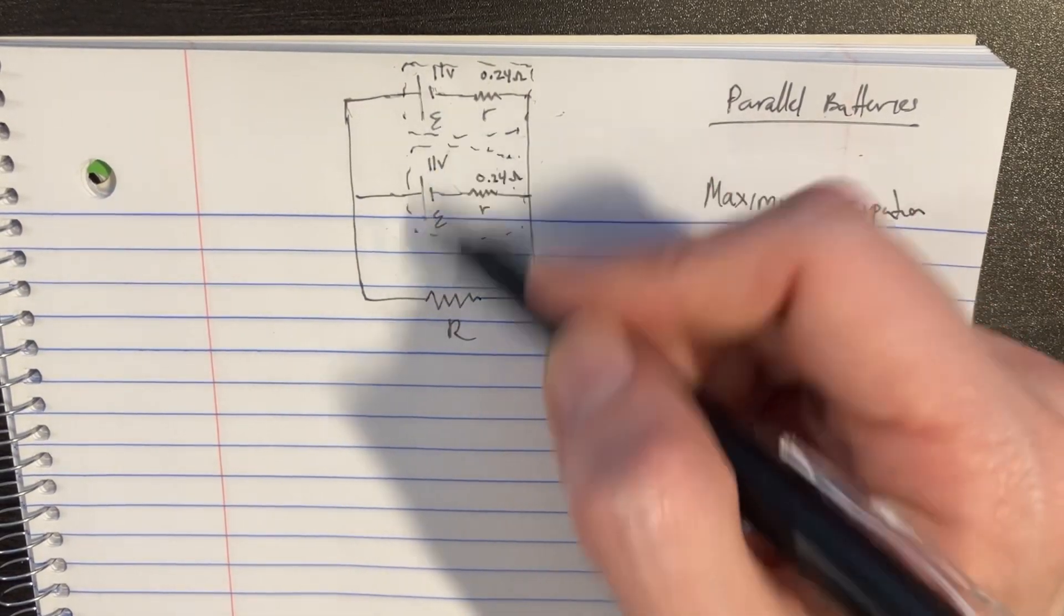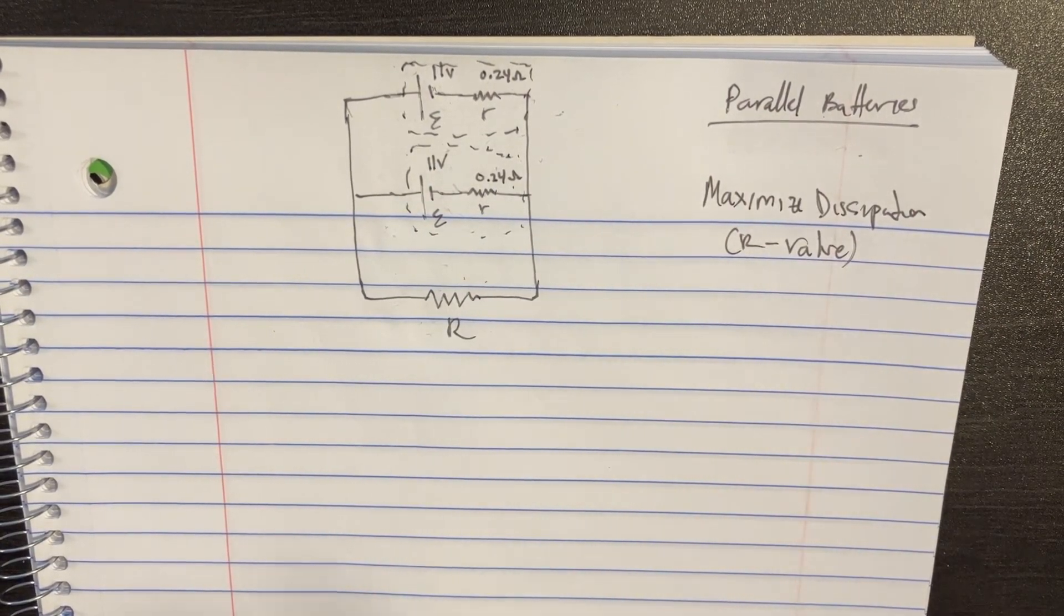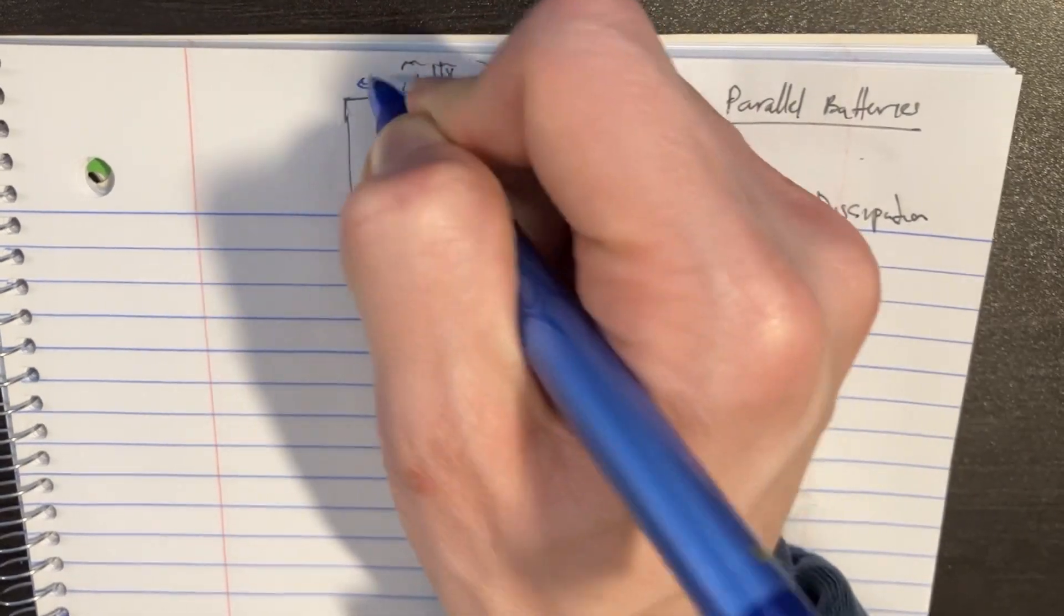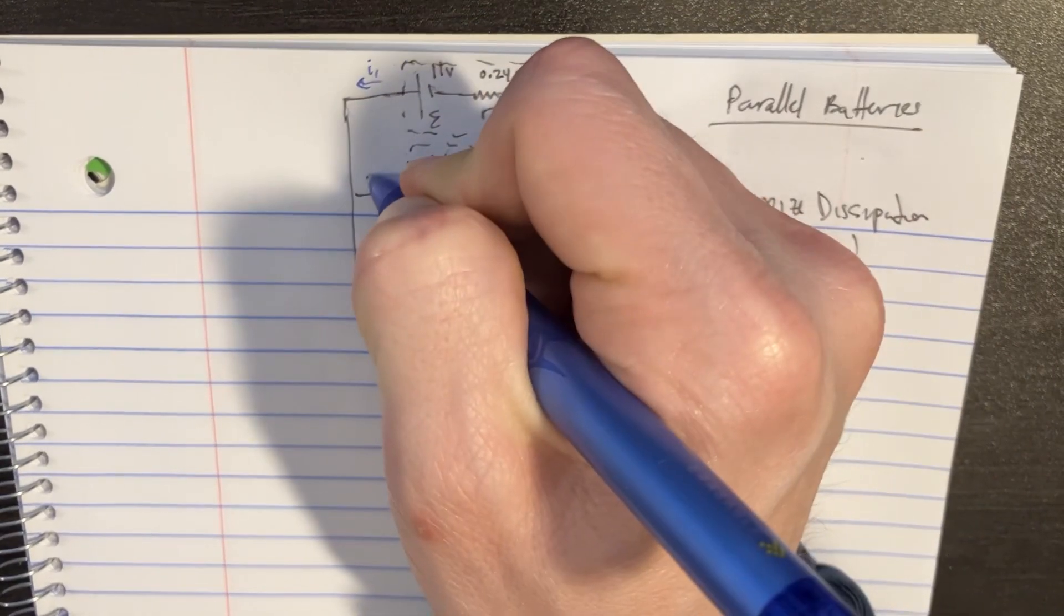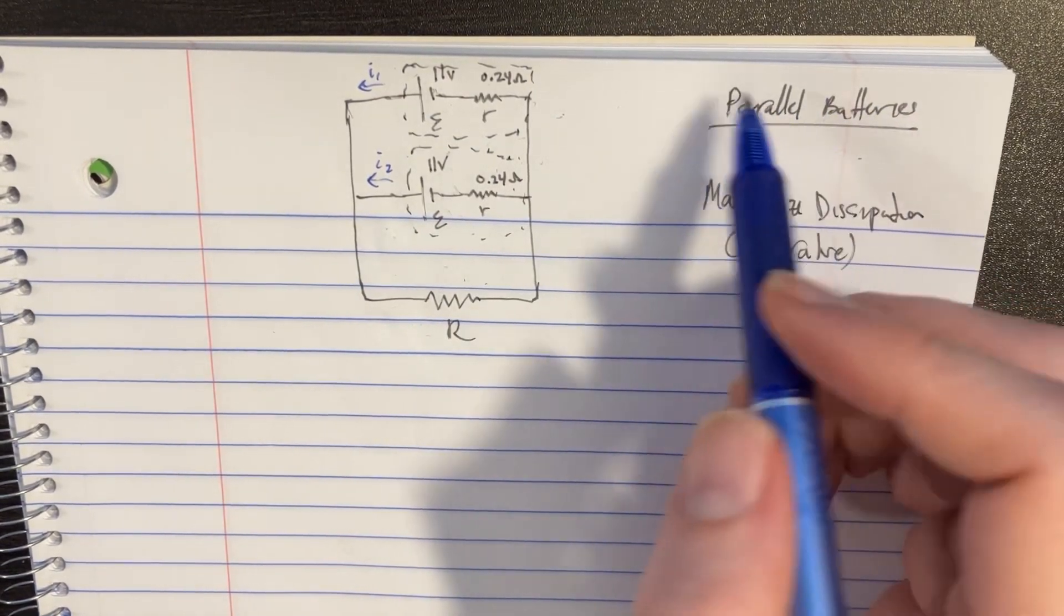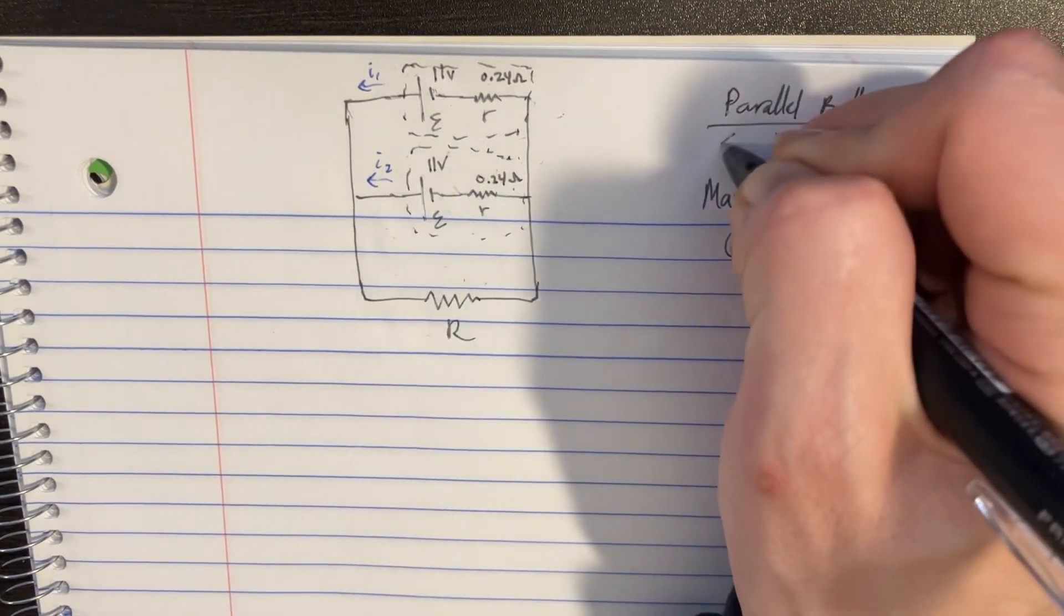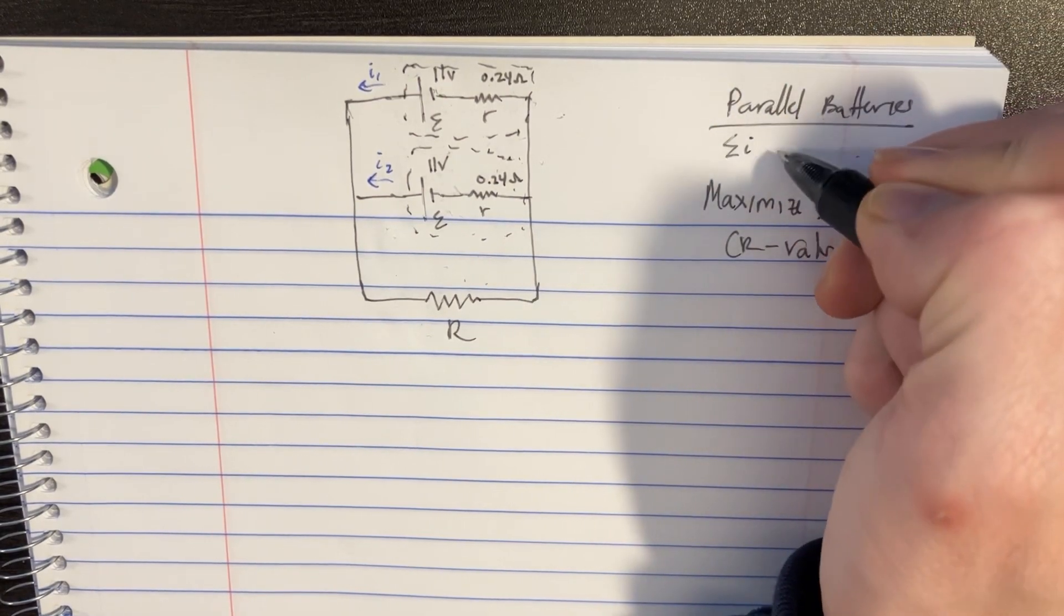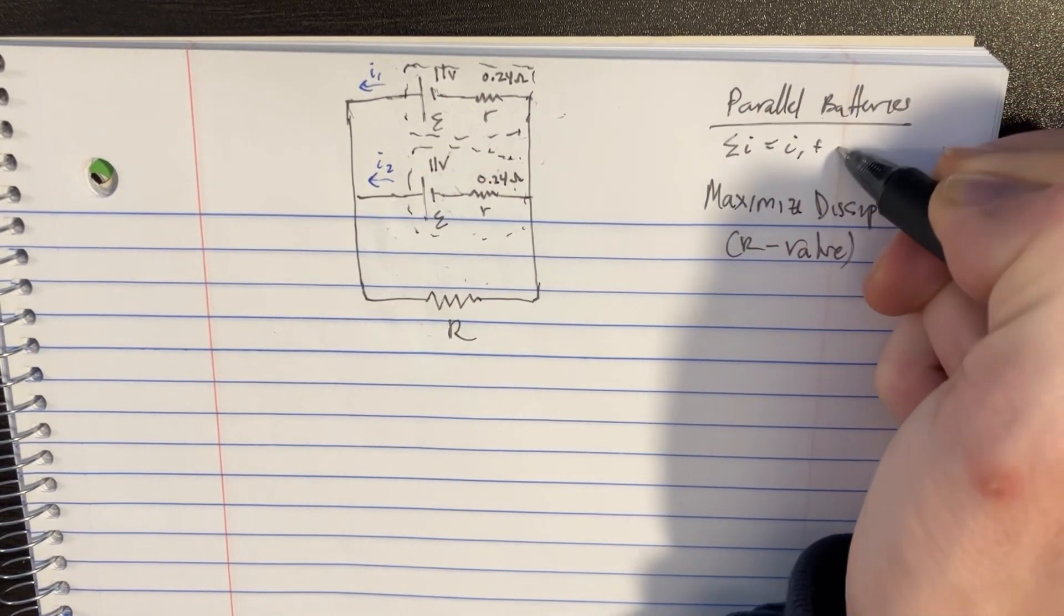So we got a couple of batteries set up in parallel here, and what that means is we've got two different currents, this one here set up as i1 and this one here set up as i2. But with parallel batteries we have to remember the rule that we can add up the currents: i1 plus i2.